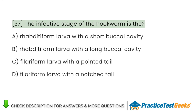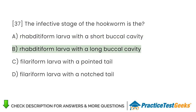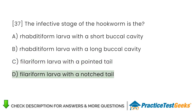The infective stage of the hookworm is the: A. Rhabditiform larva with a short buccal cavity. B. Rhabditiform larva with a long buccal cavity. C. Filariform larva with a pointed tail. D. Filariform larva with a notched tail.